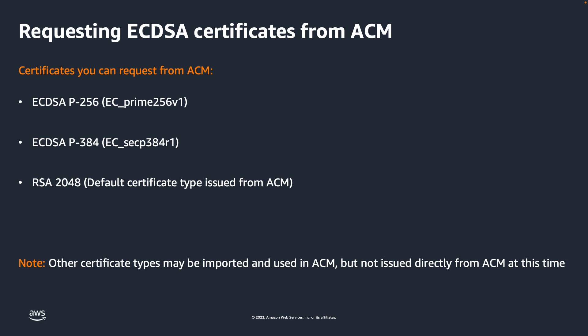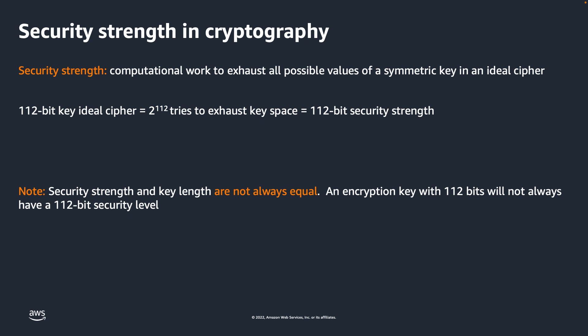Let's briefly compare the security and performance of these two public key algorithms. In cryptography, security is measured as the computational work to exhaust all possible values of a symmetric key and an ideal cipher. An ideal cipher is a theoretical algorithm that has no weaknesses, so you must try every possible key to discover which is the correct key. This is similar to the idea of brute forcing a password — trying every possible character combination to find the correct password. Let's imagine you have a 112-bit key ideal cipher, which means it would take 2 to the 112th power of tries to exhaust the key space, and we say it has a 112-bit security level. However, it is important to realize that security strength and key length are not always equal, meaning an encryption key with a length of 112 bits will not always have a 112-bit security level.